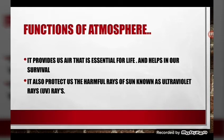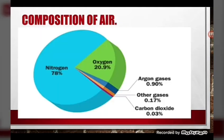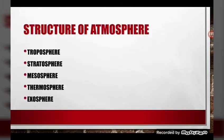Functions of the atmosphere: it provides us the air that is essential for life and helps in our survival. It also protects us from the harmful rays of the sun, known as ultraviolet rays or UV rays. The composition of air includes nitrogen at 78%, oxygen at 20.9%, argon at 0.90%, other gases at 0.17%, and carbon dioxide at 0.03%.